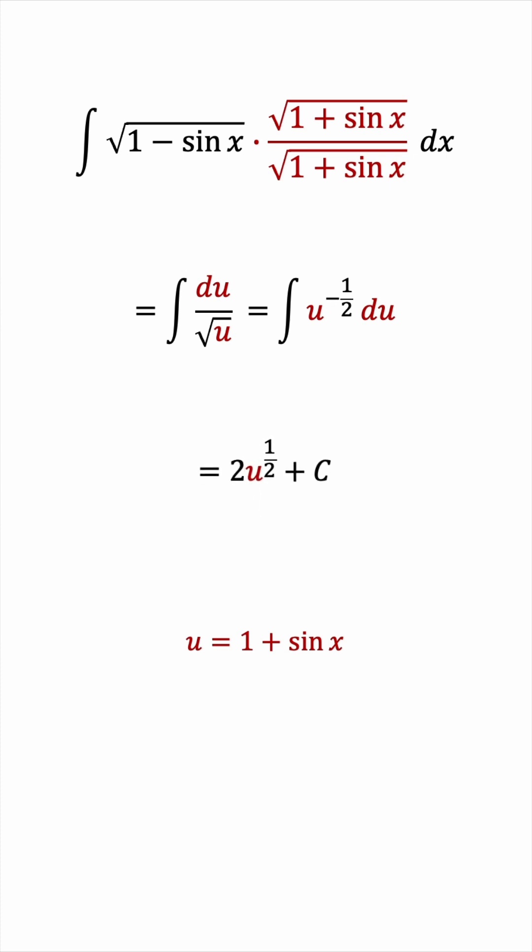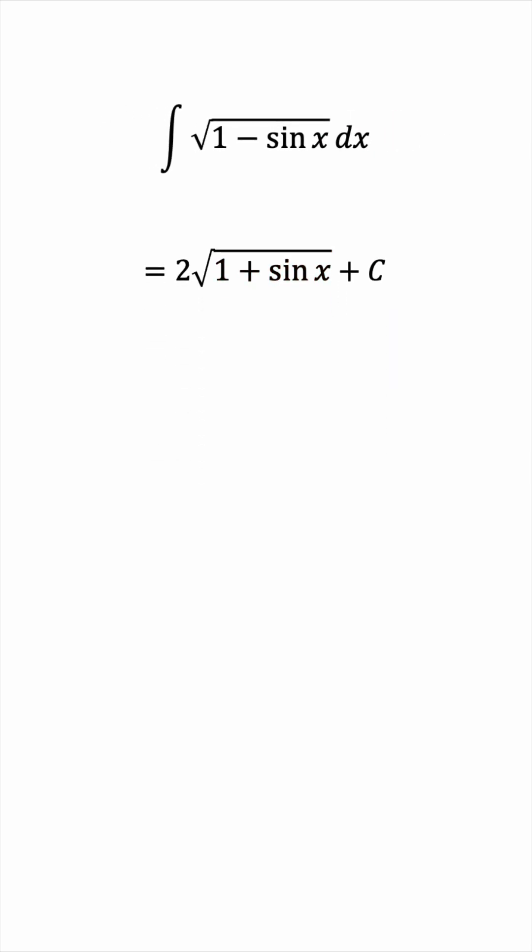Again u to the 1 half is like the square root of u. And all we have to do now is substitute back the expression for u in terms of x. So that's it. The integral of the square root of 1 minus sine x is 2 times the square root of 1 plus sine x plus a constant of integration c.